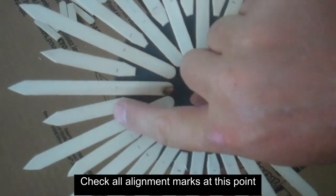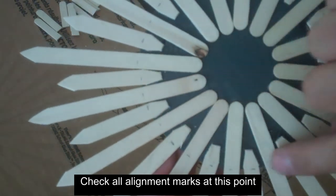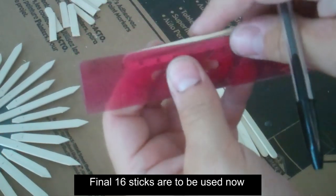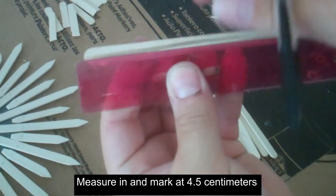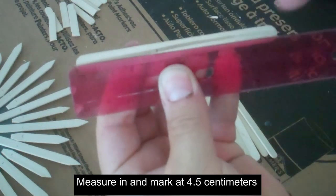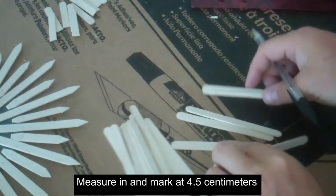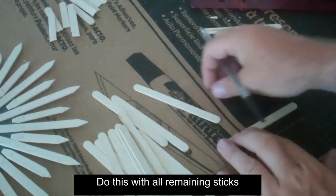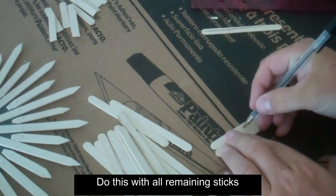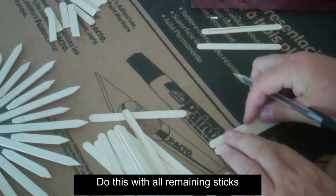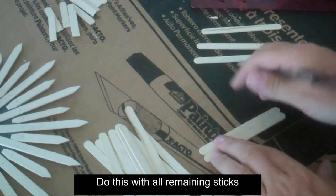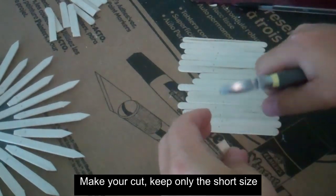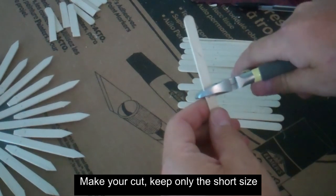When you are done, all of those marks should be lined up at the edge of the mirror. Now take the remaining 16 sticks and measure in 4.5 cm and make a mark. Now cut the popsicle sticks along the end line. You will be using only the shorter end.